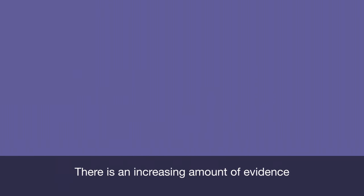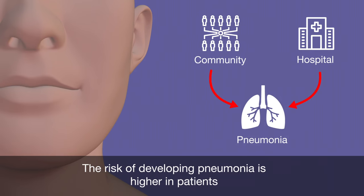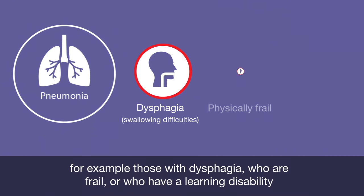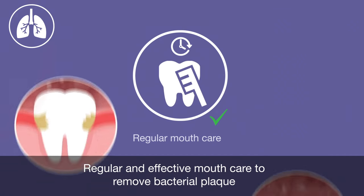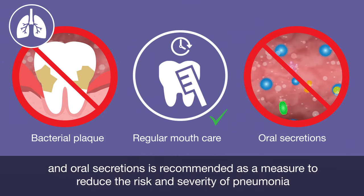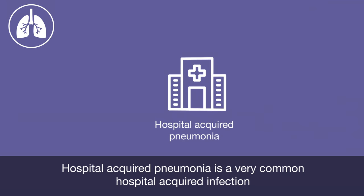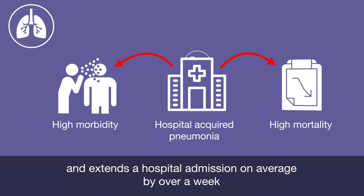There is an increasing amount of evidence linking poor oral care to community and hospital acquired pneumonia. The risk of developing pneumonia is higher in patients who are already compromised, for example those with dysphagia, who are frail, or who have a learning disability. Regular and effective mouth care to remove bacterial plaque and oral secretions is recommended as a measure to reduce the risk and severity of pneumonia. Hospital acquired pneumonia is a very common hospital acquired infection, with high morbidity and mortality rates, and extends a hospital admission on average by over a week.